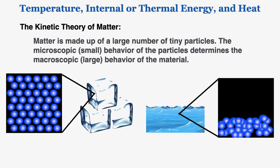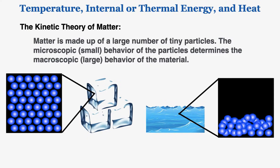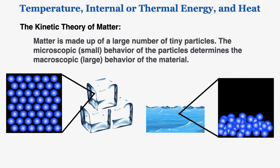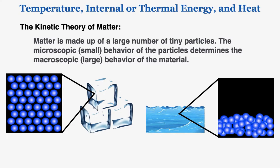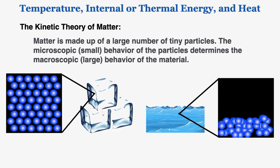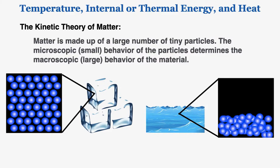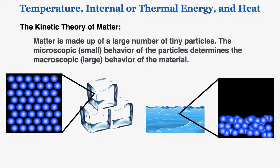All matter is made up of a large number of tiny particles, and the microscopic or small behavior of the particles determines the macroscopic or large behavior of the material. As an example of what I mean by the kinetic theory of matter, we can compare ice and water with each other. I know that ice and water are the same fundamental thing — they're both made of H2O — but ice and water have different temperatures and different properties.